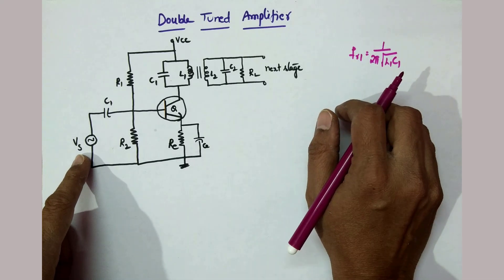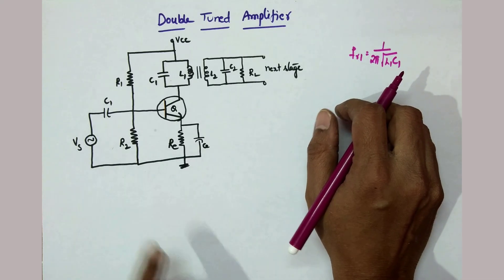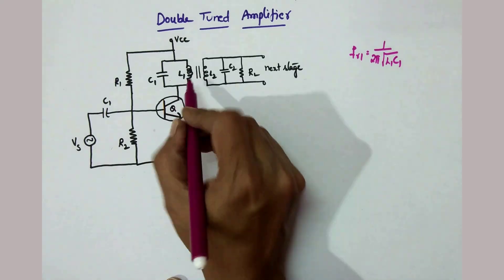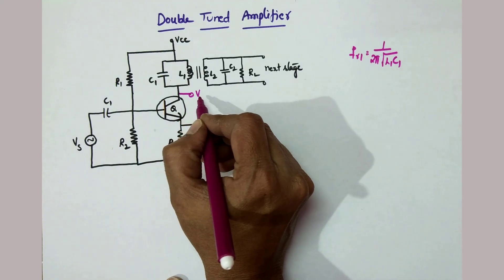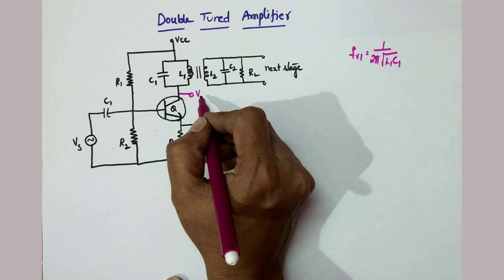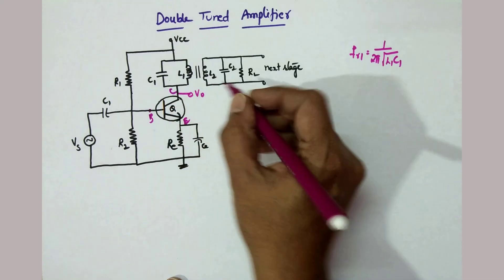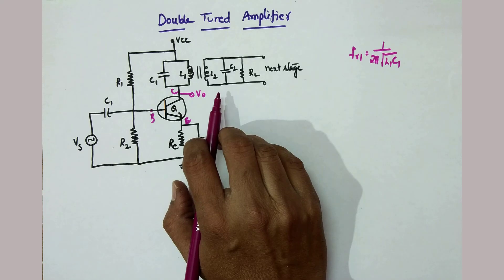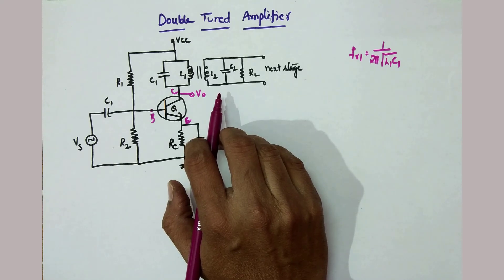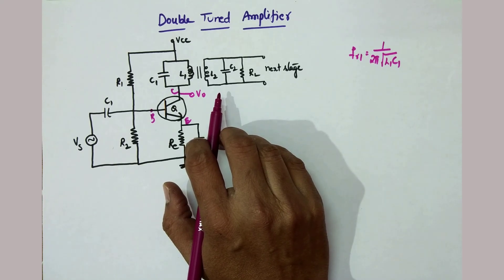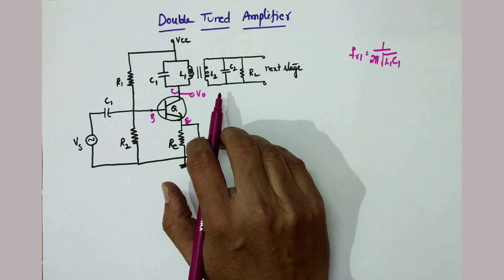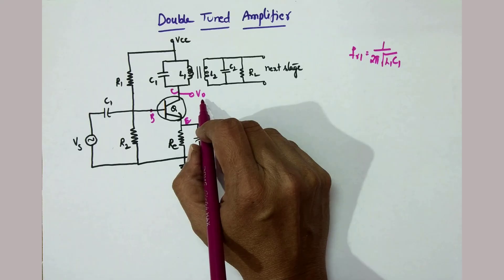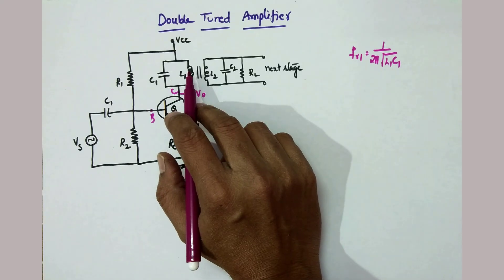Whenever the applied signal frequency is equal to the resonant frequency, the output consists of the highest amplitude at the resonant frequency. It rejects or attenuates all other frequencies. You get that output because of this tuned circuit.